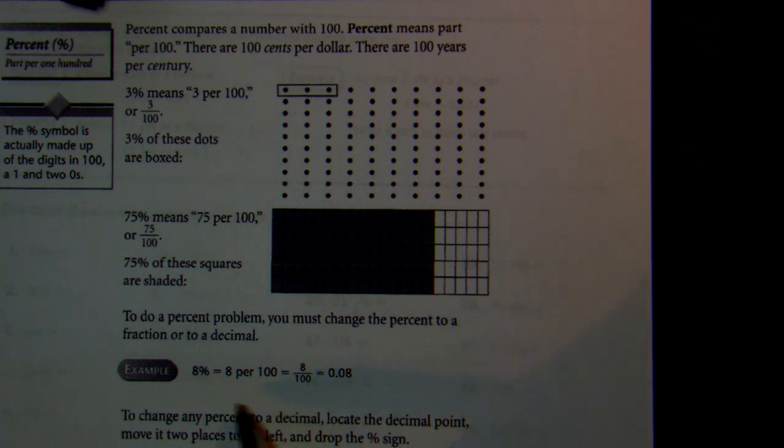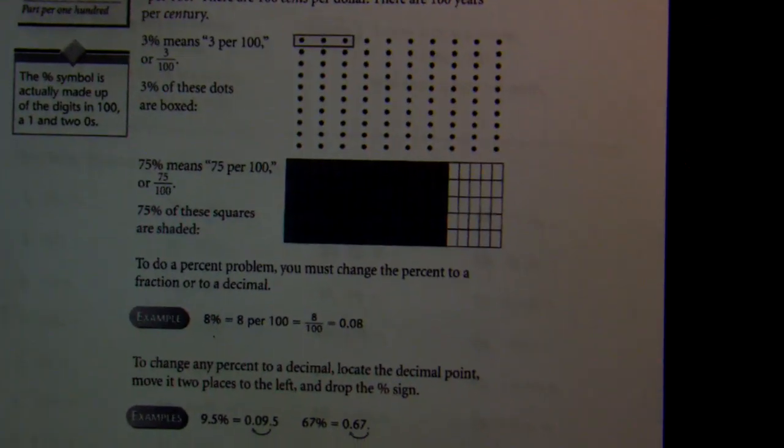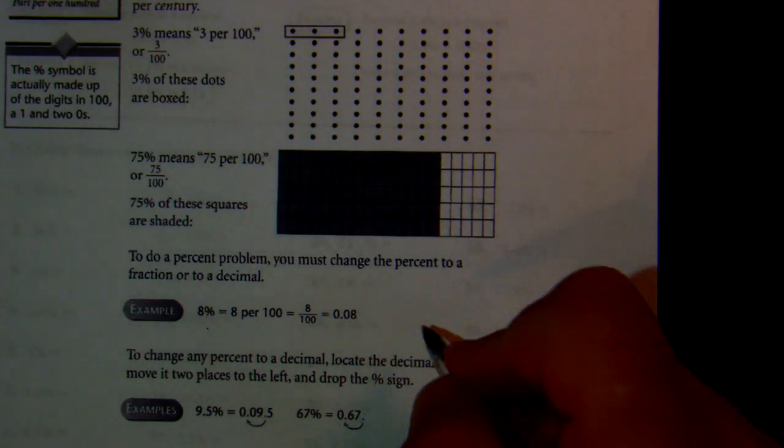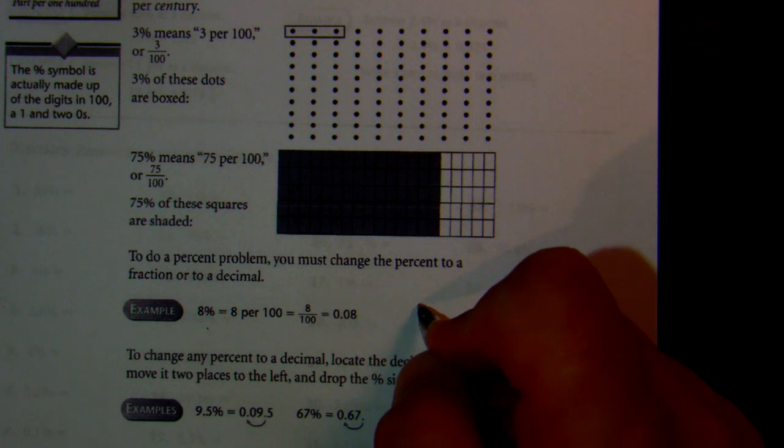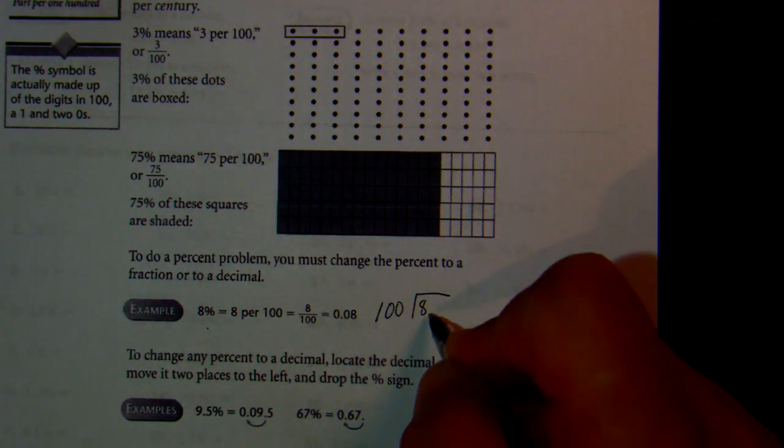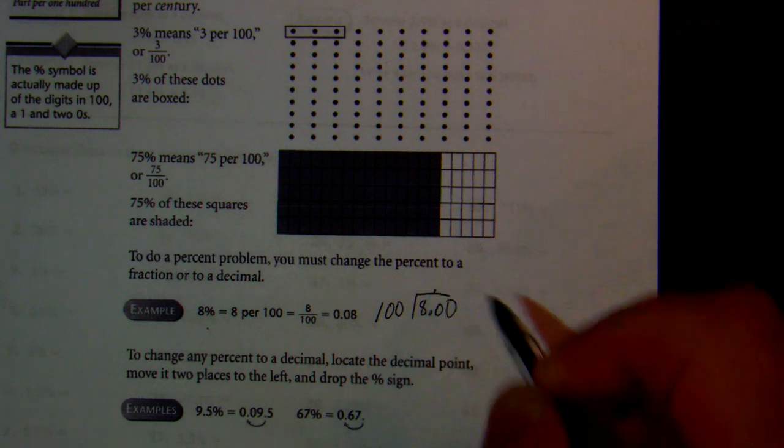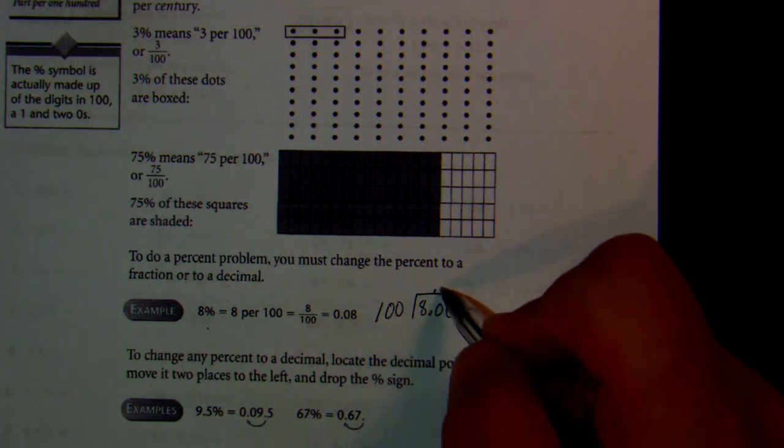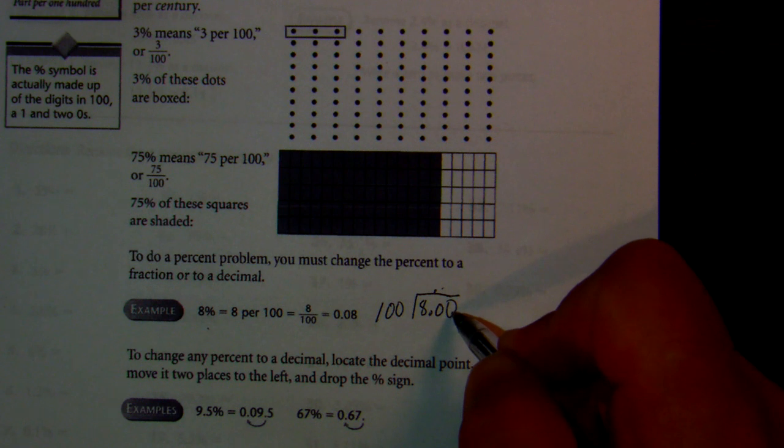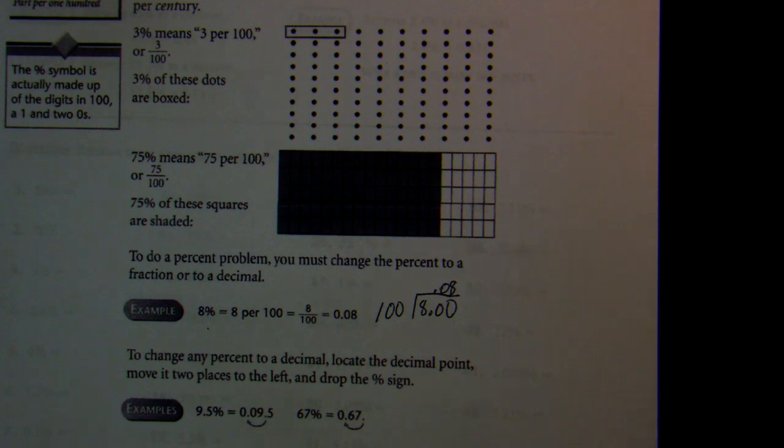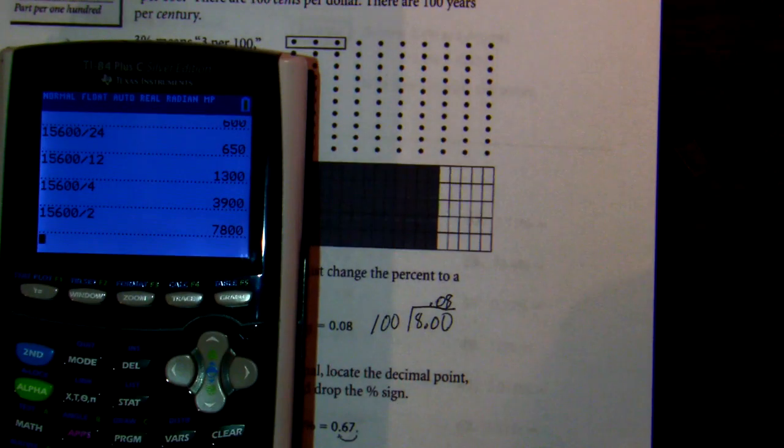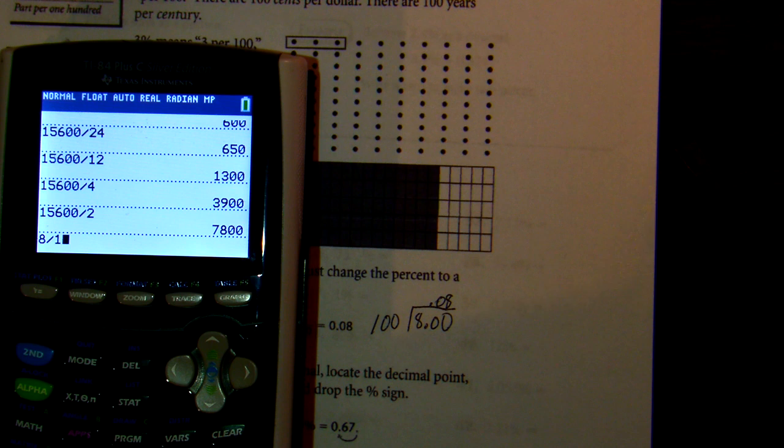So in our example we have 8 percent here. If you take 8 divided by 100, in this case you've got to put the decimal 0.0, decimal goes on top. 8 goes into 800, 8 times, but it goes above this zero here, so you would get 0.08. Also, take your calculator, do the same thing: 8 divided by 100 equals 0.08.